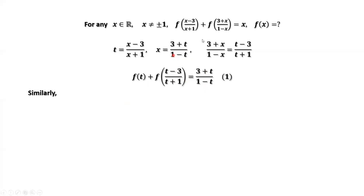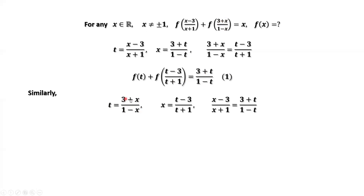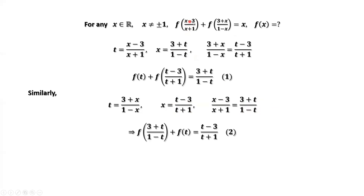Similarly, we define t equals (3 plus x) over (1 minus x). This is the inside part, here is t. Solving this equation for x, we have x equals (t minus 3) divided by (t plus 1). Rewriting (x minus 3) over (x plus 1) in terms of t, which is (3 plus t) over (1 minus t). Therefore we have the second result: (x minus 3) over (x plus 1) equals (3 plus t) over (1 minus t).